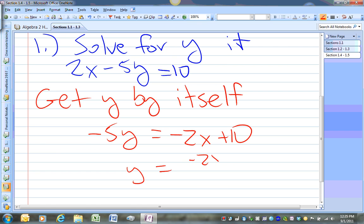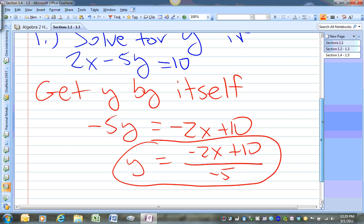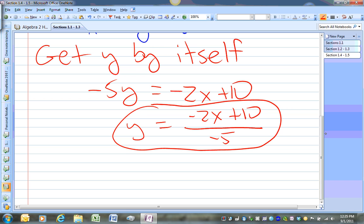Y is going to equal negative 2x plus 10 over negative 5. And that's it. We're all done because we already got y by itself. So that's one way you can do it.